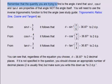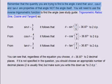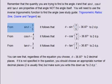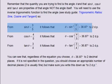Remember that the quantity you are trying to find is the angle theta, and that sine theta, cosine theta and tangent theta are properties of that angle, not the angle itself. You'll need to use the inverse trigonometric function to find the angle — see the study guide Trigonometric Ratios: Sine, Cosine and Tangent. So, from sine theta equals 3 divided by 5, it follows that theta equals the inverse sine of 3 divided by 5, which equals 36.87 degrees to two decimal places.